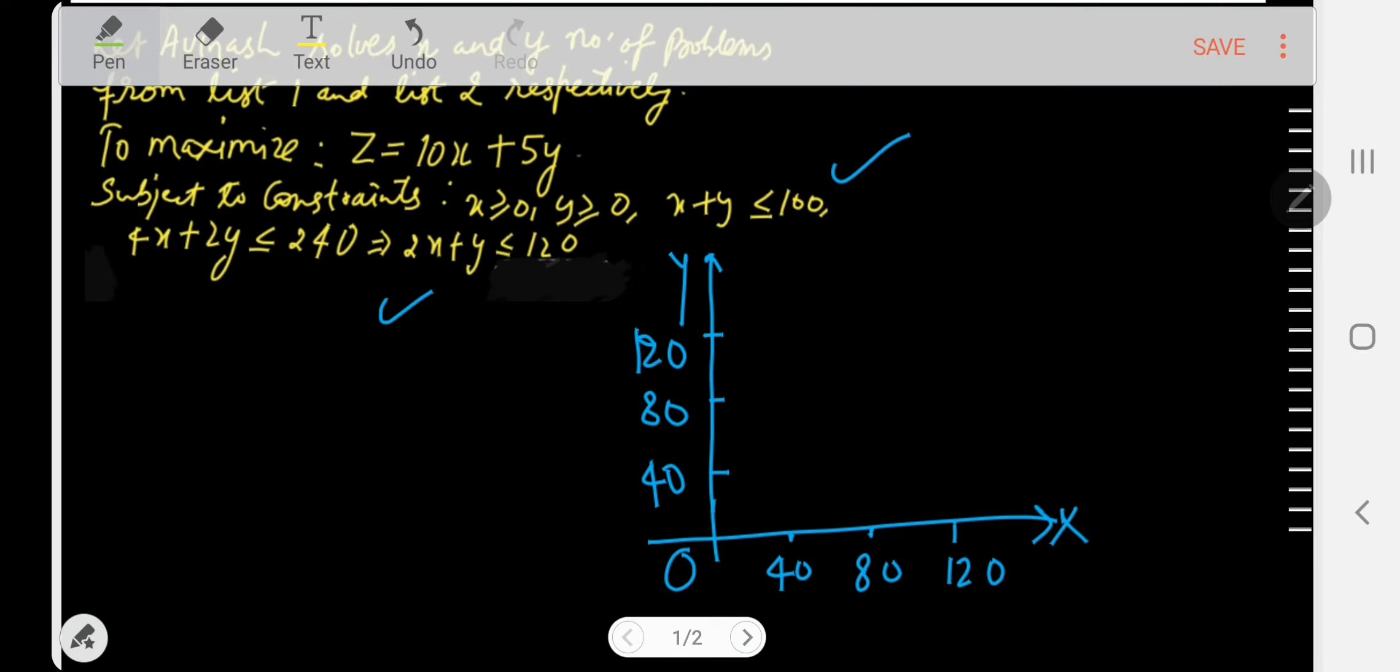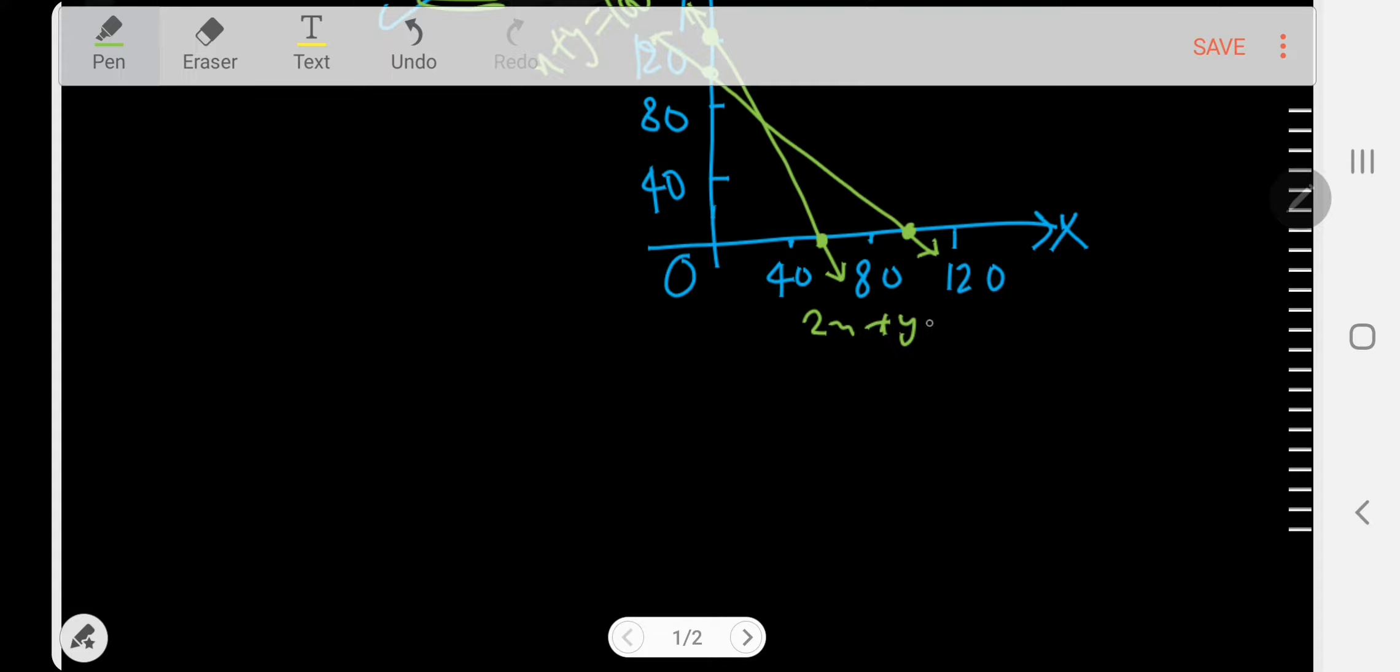I will plot the lines with the help of green ink. For this one, when x is 0, y will be 100, and when y is 0, x will be 100. This is the line x + y = 100. Now for the second one, when x is 0, y will be 120, and when y is 0, x will be 60. So this is the second constraint, 2x + y = 120.